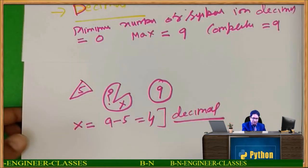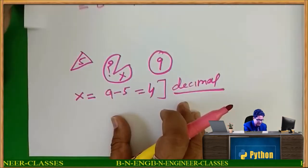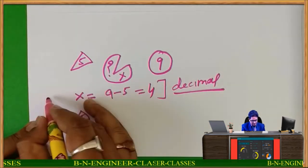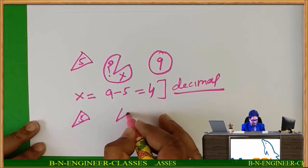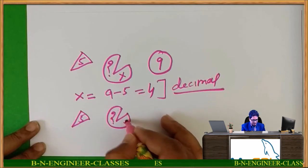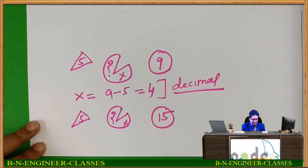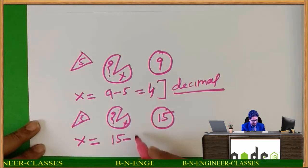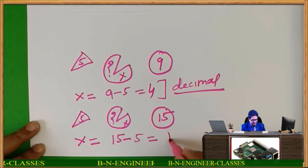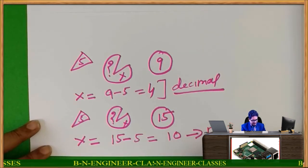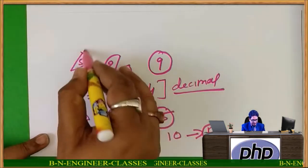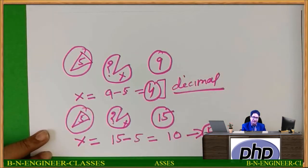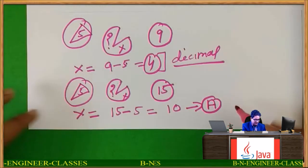In hexadecimal, you have 5 and this is question mark x. In hexadecimal, the complete is 15. So x will be equal to 15 minus 5 equal to 10, and 10 is represented by the symbol A. So complement of 5 in decimal will be 4, and complement of 5 in hexadecimal will be A.